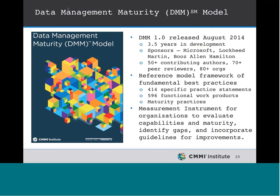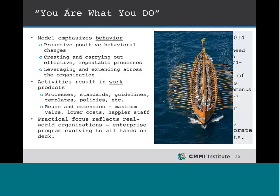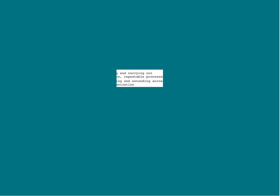The DMM has 414 practice statements and 596 example functional work products that are typically produced in doing those practices. It emphasizes behavior — proactive behavioral changes on the part of both business staff and IT. You are what you do, essentially. The image of the rowboat illustrates what it takes to have a great data management program: it's important to be practical and get everybody rowing in the same direction.